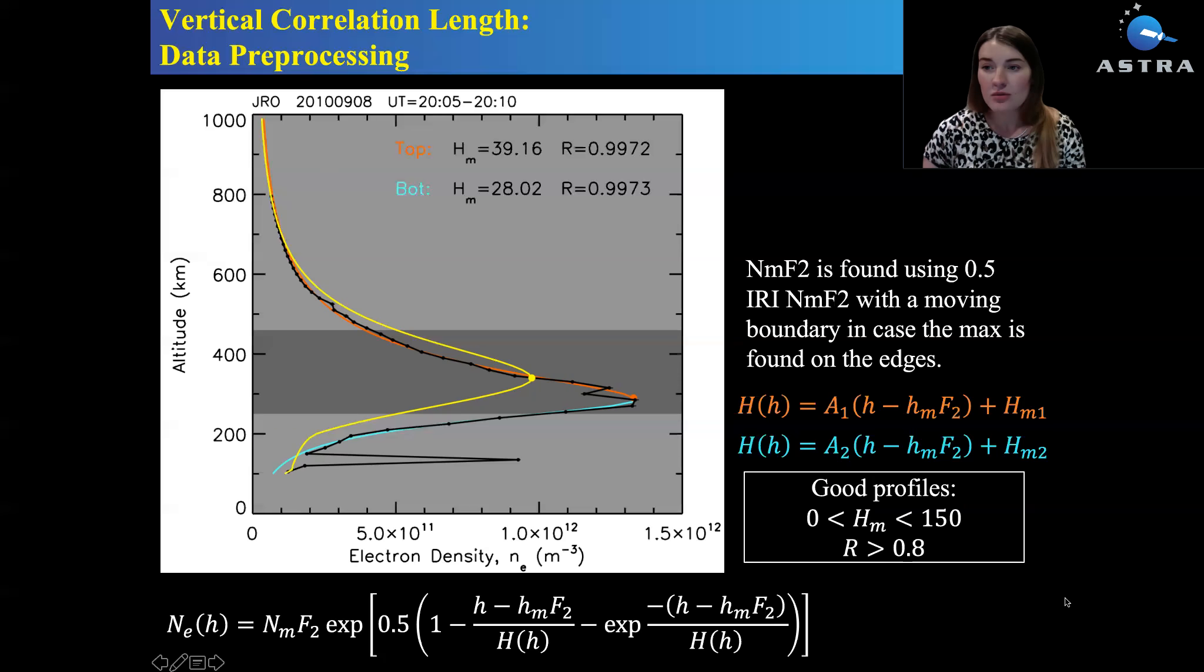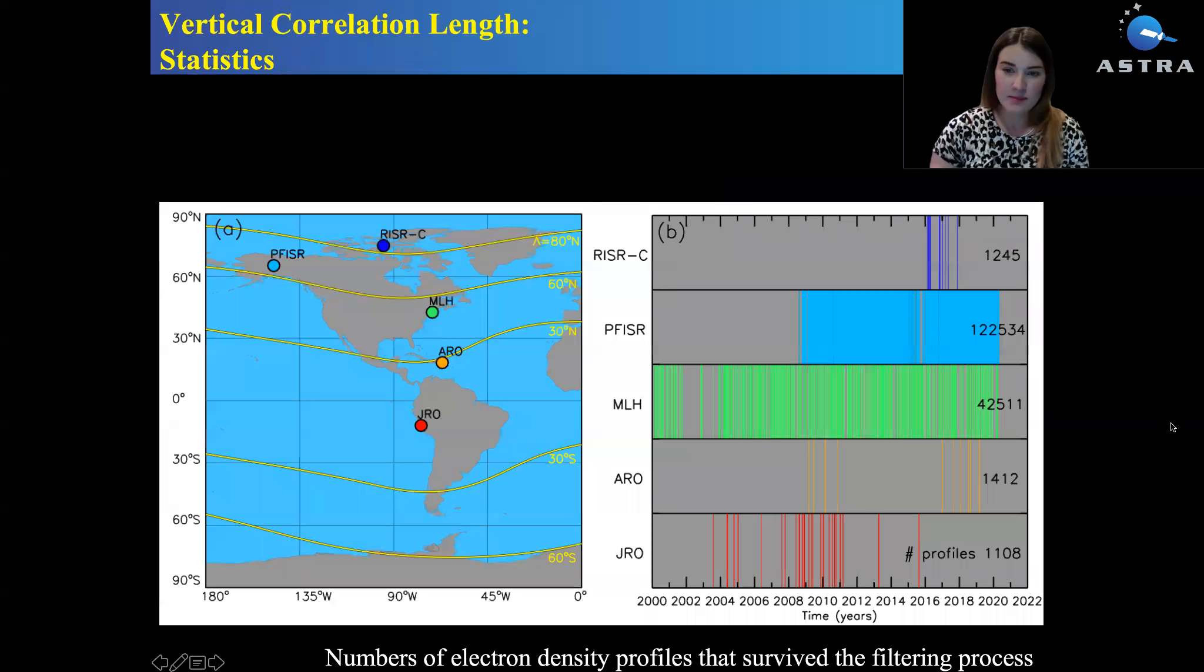For the model errors, I would find the difference between the IRI expected profile and the fitted profile. So for all five sites, here are the numbers shown in black of how many profiles survived this fitting procedure. These profiles were used to find the correlations.